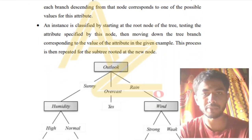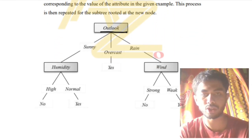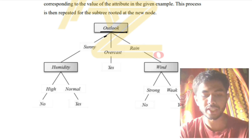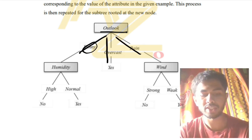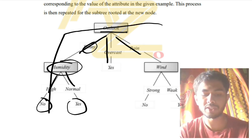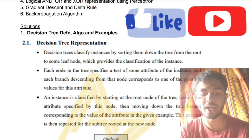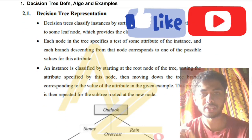Let's take this example to understand. You have a feature called 'outlook,' and outlook can be of three types: sunny, overcast, and rain. If it is sunny, the best classifier is humidity, and in that you have high and normal, giving you 'No' or 'Yes' based on whether the person will play tennis or not. This kind of representation is called a decision tree.